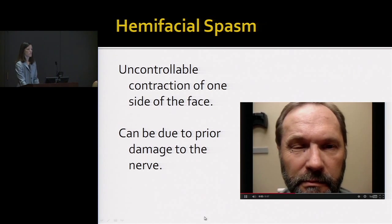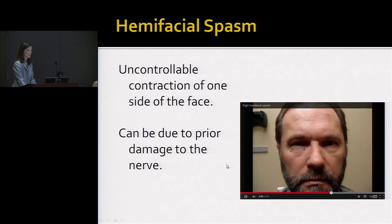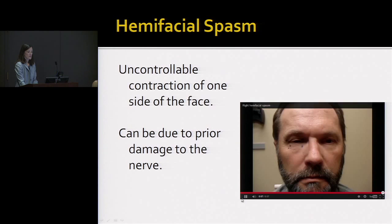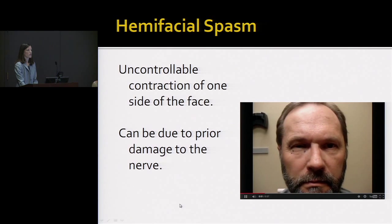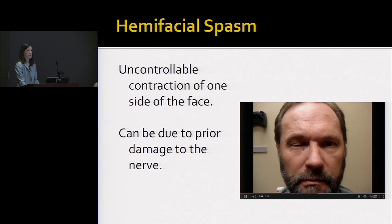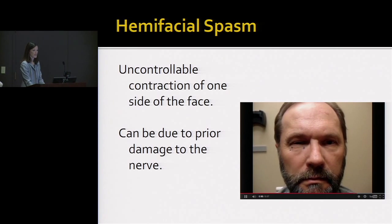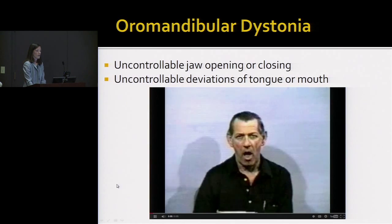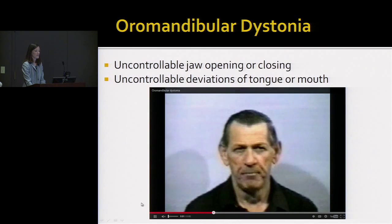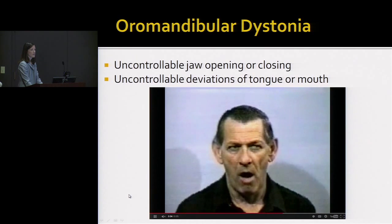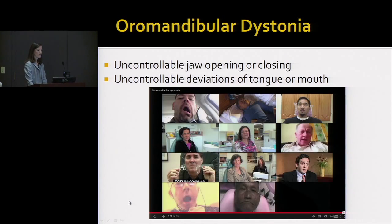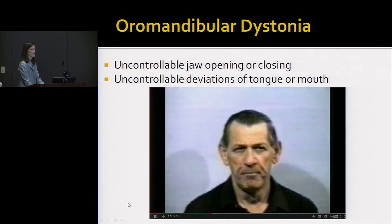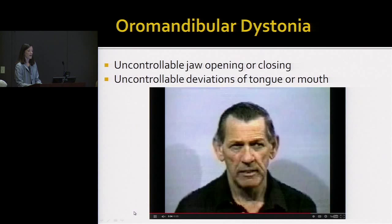This is hemifacial spasm, which is uncontrollable contraction of one side of the face. As opposed to some of the other dystonias, we do know that this one can be due to damage to the facial nerve. Oromandibular dystonia is uncontrollable jaw opening and closing. It can also include deviations of the tongue or the mouth.